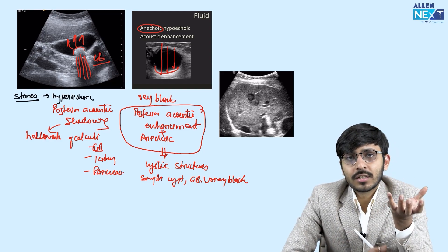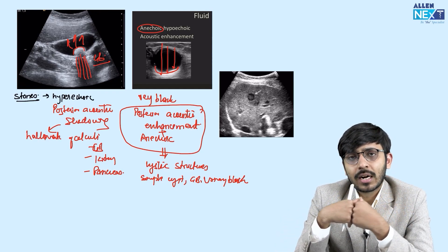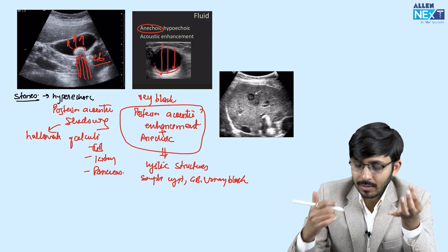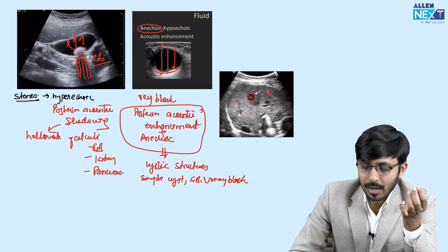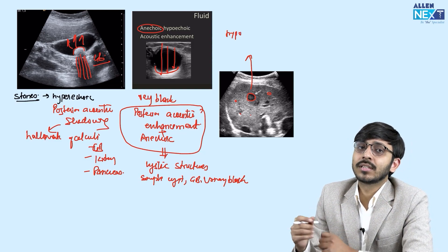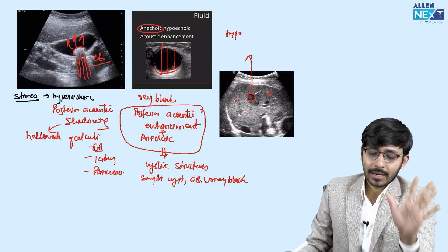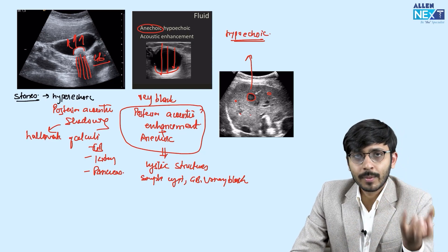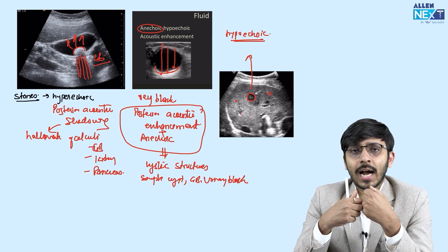Some structures do not allow sound waves to pass completely — some are transmitted and some are reflected. They appear black, but not very black, as compared to the surrounding liver parenchyma. These structures are known as hypoechoic. Most of the lesions in tissues are hypoechoic.